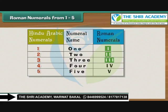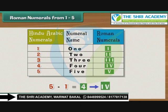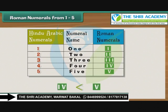4 and 5 are written slightly differently. V represents the numeral 5. Since 4 is 5 minus 1, it is expressed as IV. Whenever the Roman numeral I precedes another Roman numeral, it represents a number which is 1 less than the second Roman numeral. So IV means 1 less than 5, that is 4.